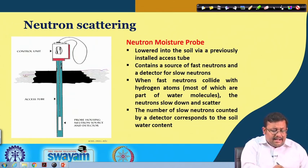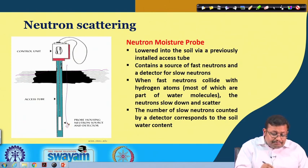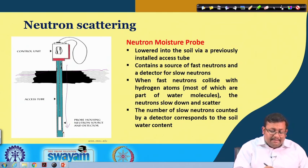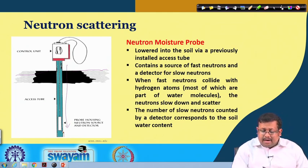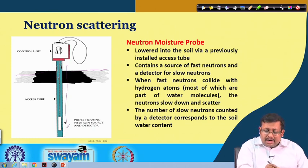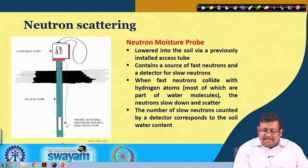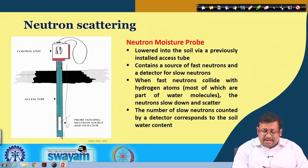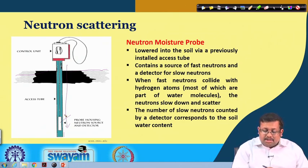This is the soil surface and we generally lower the probe. Before lowering the probe we have to install an access pipe. This access tube is made of metal. The neutron moisture probe is lowered into the soil through a previously installed access tube and it contains a source of fast neutrons and a detector of slow neutrons. Once we insert the probe through the access tube and generate neutrons, these neutrons collide with hydrogen atoms.